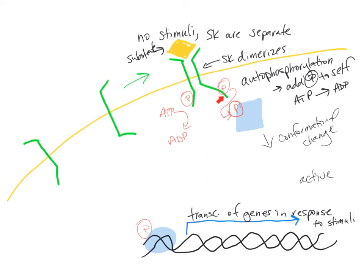Those phosphate groups then get transferred to our response regulator. When that happens, the response regulator undergoes a conformational change from its inactive form to its active form.